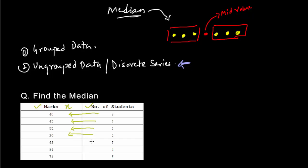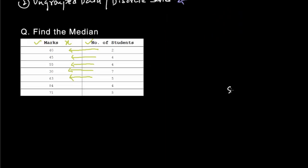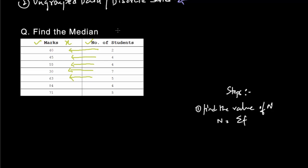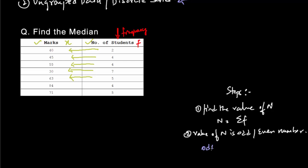So, how do we find the median for this kind of question? The first step is to find the value of N, where N equals the summation of the frequency column — meaning you add all the values in the frequency column. The second step is to check whether N is an odd or even number. If it is odd, we do (N+1)/2, that is, we add 1 to N and divide by 2.